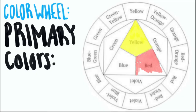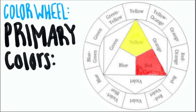Now that we've got the basics out of the way, let's talk about the color wheel. Primary colors — red, yellow, and blue — cannot be created by other colors, but any color can be made from them.